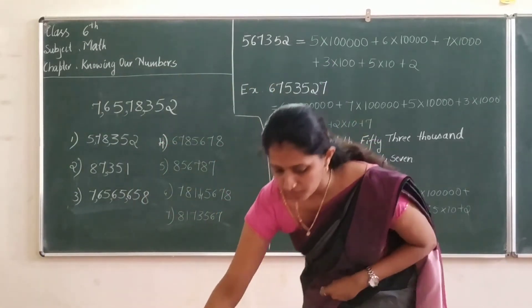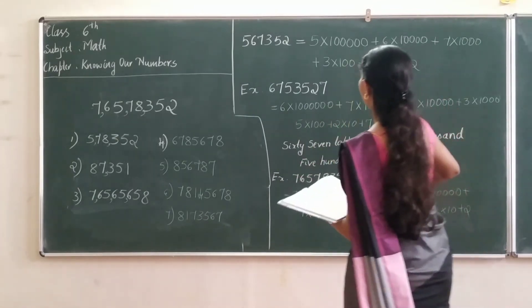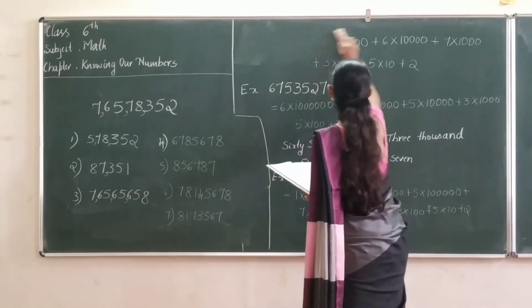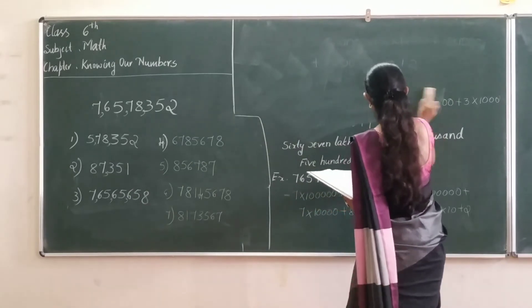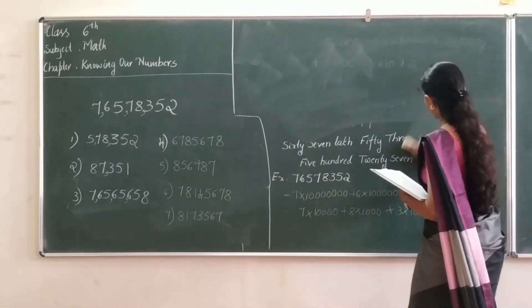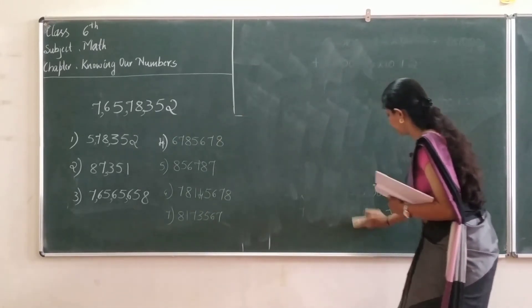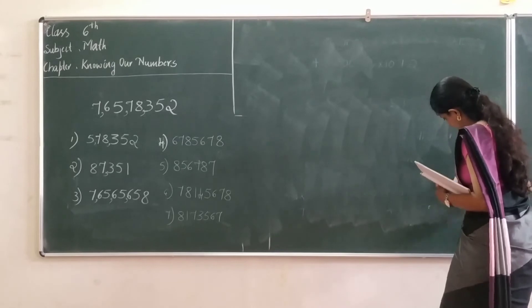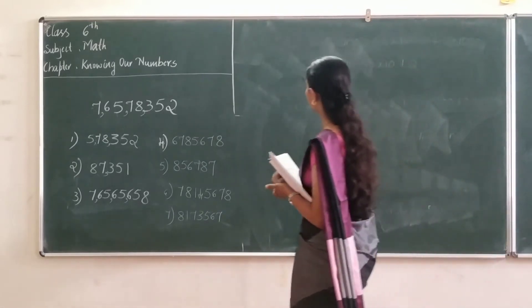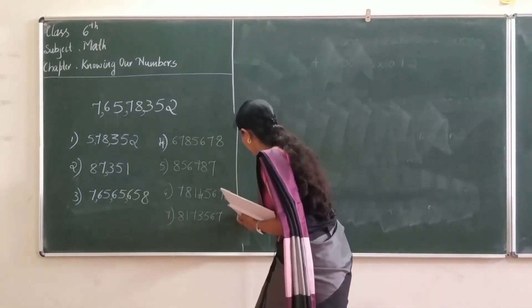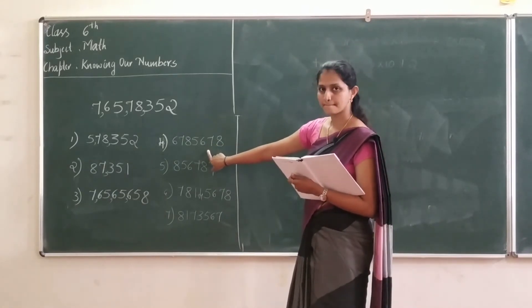You have to put a comma and write it with the number name and expansion form. Finish this one. What is the answer?